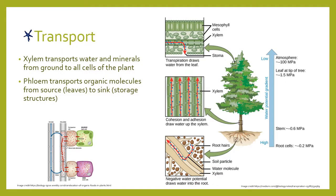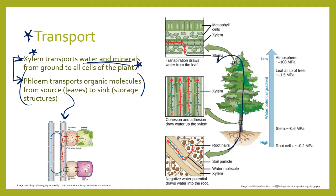Transport in plants happens in the vascular tissues — xylem and phloem. Phloem is what transports sugars all around the plant. We're looking today just at xylem; phloem will be a later lecture. Xylem transports water and minerals from the roots to all the cells of the plant — water in through the roots, up the stem, and then out the leaves.